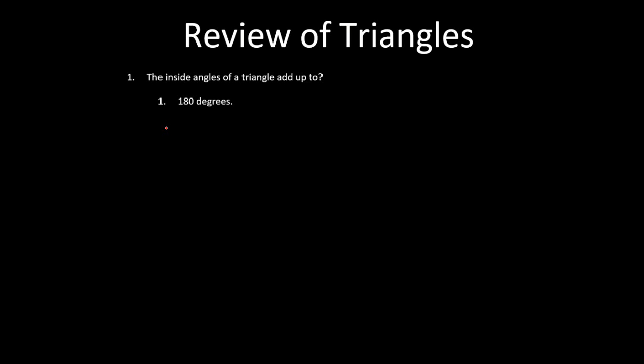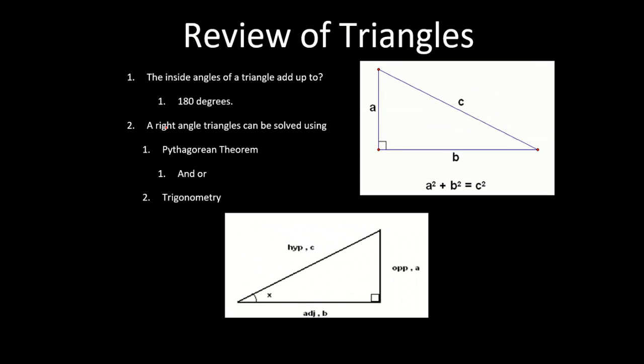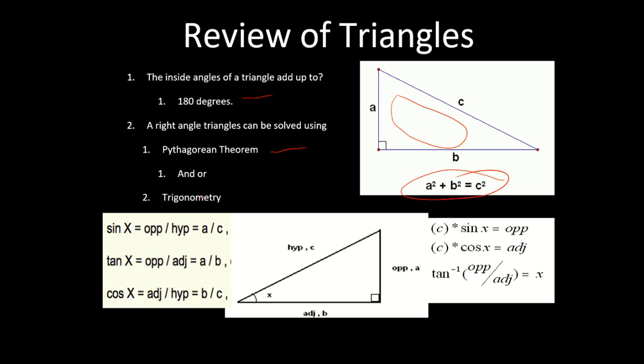This is going to be a bit of a challenge, but we're going to keep it nice and simple. You've got a lot of notes and we're going to cut out a lot that you won't need. Let's start with simple triangles. Inside a triangle there's 180 degrees, and you know the Pythagorean theorem — that's all going to be on a formula sheet, you don't need to memorize it.